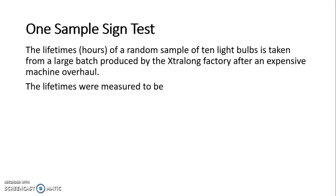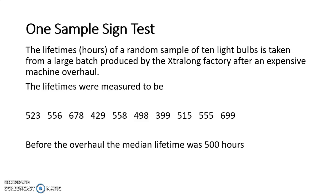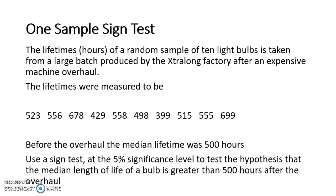The lifetime in hours of a random sample of 10 light bulbs is taken from a large batch produced by the extra-long factory after an expensive machine overhaul. The lifetimes were measured to be, and there we have our lifetimes. Before the overhaul, the median lifetime was 500 hours. Use a sign test at the 5% significance level to test the hypothesis that the median length of life of a light bulb is greater than 500 hours after the overhaul.